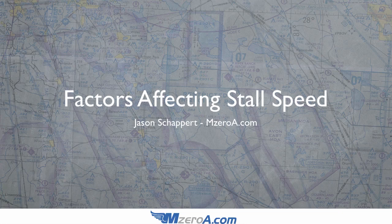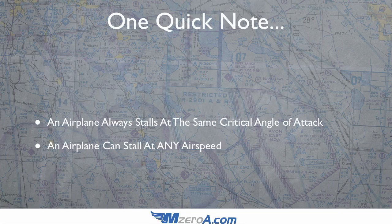Hey everyone, Jason Schapper here, and in today's video we're talking about factors affecting stall speed. First, one quick note: an airplane is always going to stall at the same critical angle of attack. However, an airplane can stall at any airspeed. The stall is always going to happen at the same critical angle of attack, but we can reach that critical angle of attack at any airspeed, and that's really important to note.